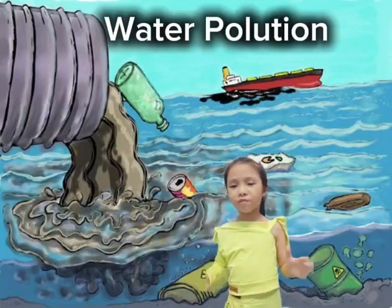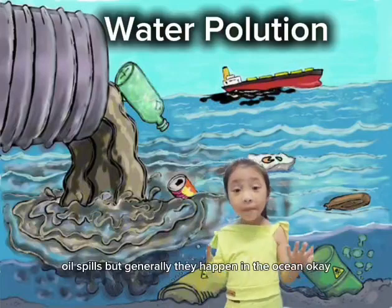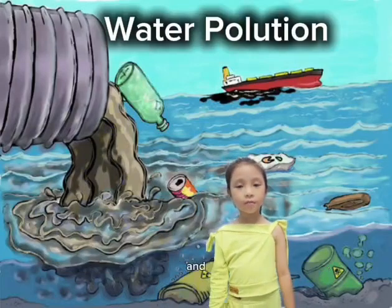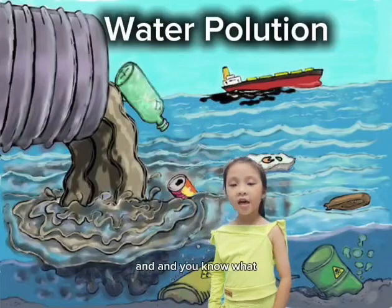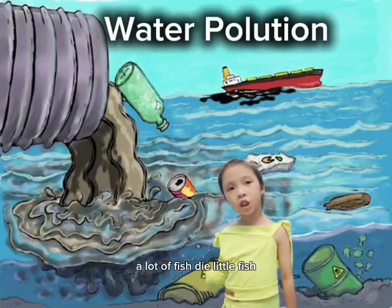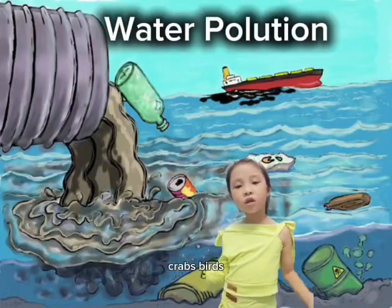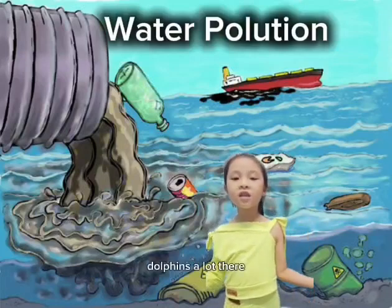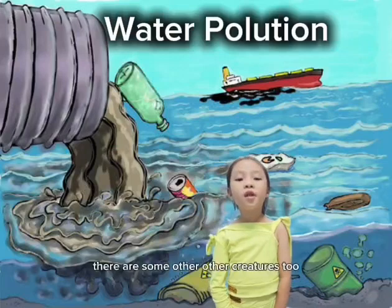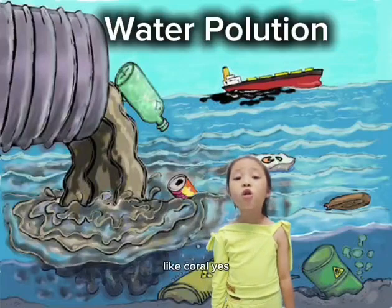Oil spills, which generally happen in the ocean. And you know what, a lot of fish die — fish, crabs, birds, dolphins, a lot. There are some other creatures too, like coral.